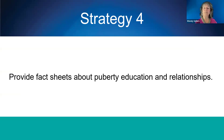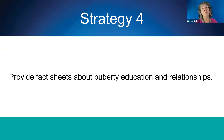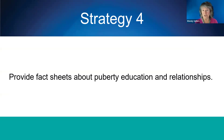Strategy four: provide fact sheets about puberty education and relationships that are developmentally appropriate, beginning in the lowest grades and continuing through graduation. Inform parents about what students need to learn at each age to help them navigate their development into sexually healthy adults. You can see the resource list in the blog post for a free chart describing healthy childhood sexual development, which you can share with the parents in your school.